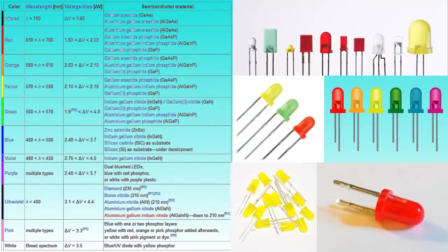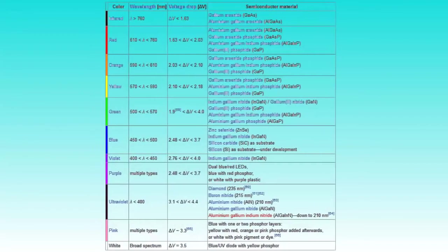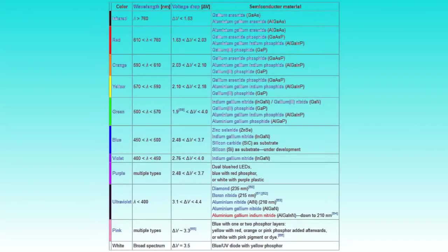As a side note, the color of the housing of an LED does not determine the color of the light. As I said, the color of the light is determined by the semiconductor material that is used.